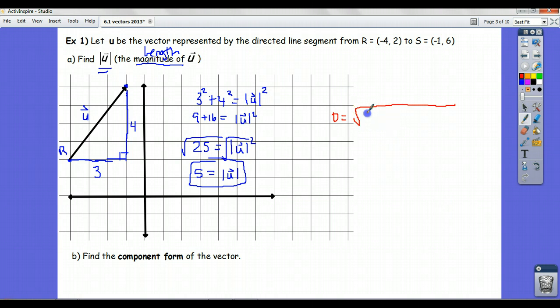The distance formula would say, take your x coordinates, -1 subtract -4, square that, plus 6 minus 2, the difference in your y coordinates, square that. And here, when you work it all out, you get the square root of, -1 minus -4 is 3, 3 squared plus 4 squared, which is 5.